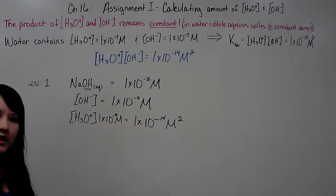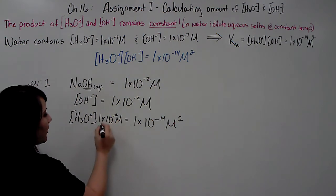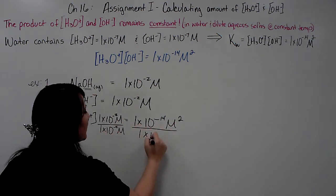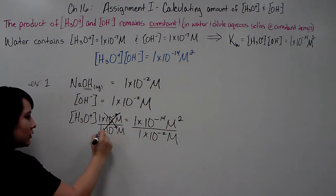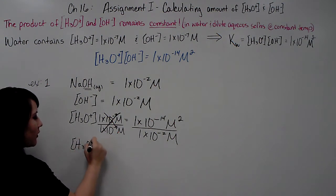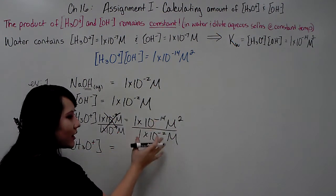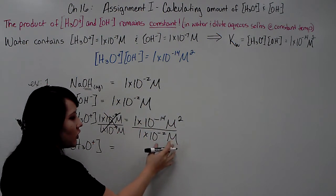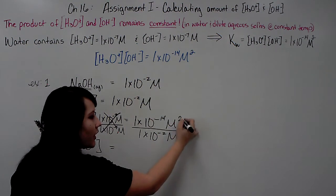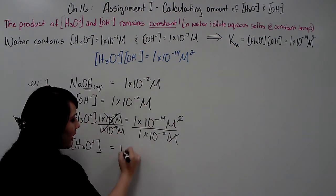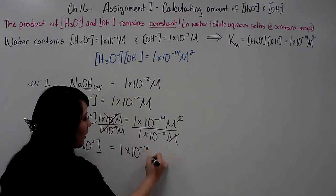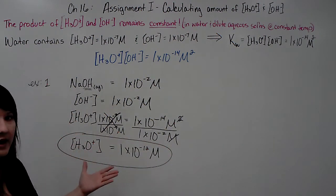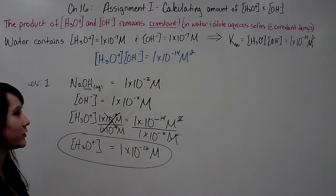Now I solve for hydronium by dividing both sides by 1×10⁻² M. Those cancel, leaving just hydronium. Dividing 1×10⁻¹⁴ by 1×10⁻² gives 1×10⁻¹² M. Note that molarity squared divided by molarity is simply molarity. So the hydronium ion concentration in the solution is 1×10⁻¹² M.